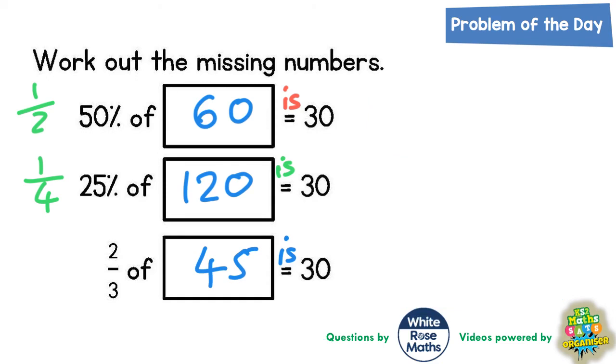There is another way we can work each one out that doesn't involve bar models. We could say, well, if we've got 50 percent of a number, that means we must have a mystery number which has been halved, because it's 50 percent, in other words divided by two to get 30.